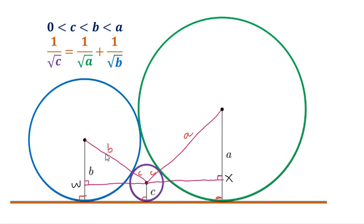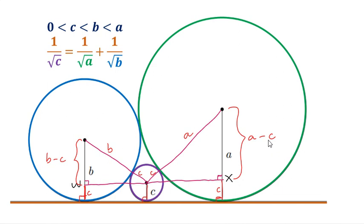Now, is it possible for us to find or label the vertical sides of the right triangles? Take note that this length right here is equal to the radius of the smallest circle, so this is C. The same is true with this — this is C. So if this length is C and the radius of the blue circle is B, this side of the right triangle must be B minus C. Similarly, this one here is A minus C.